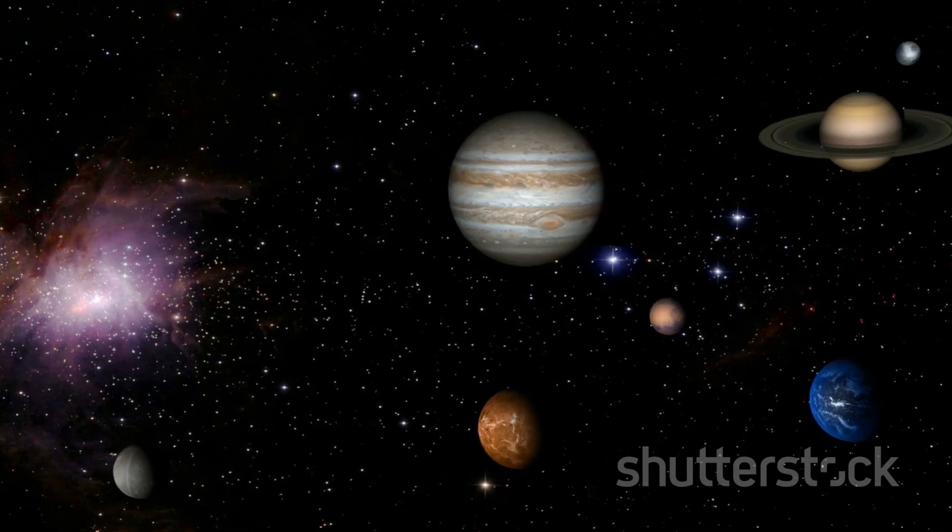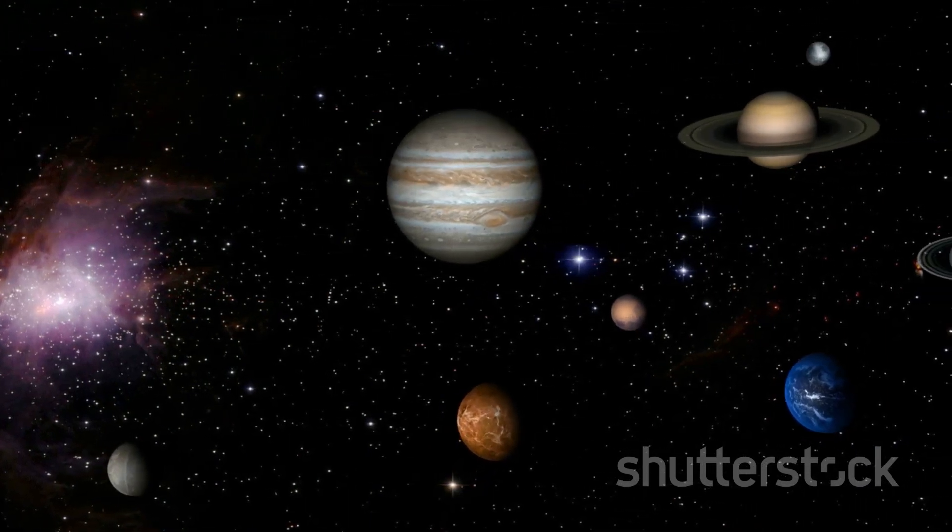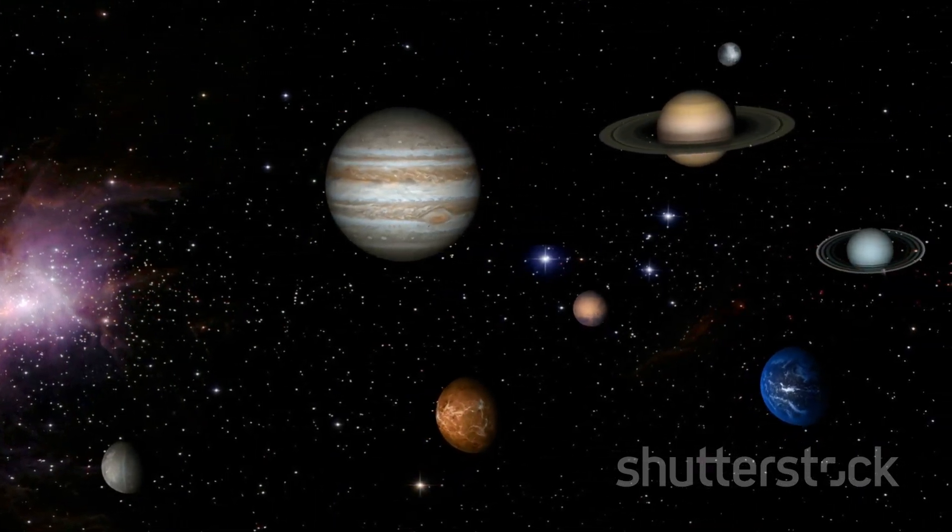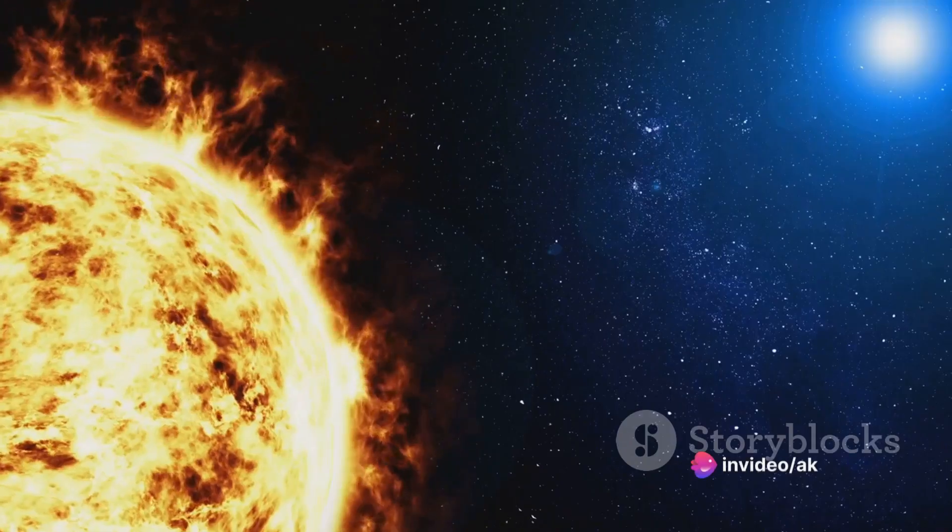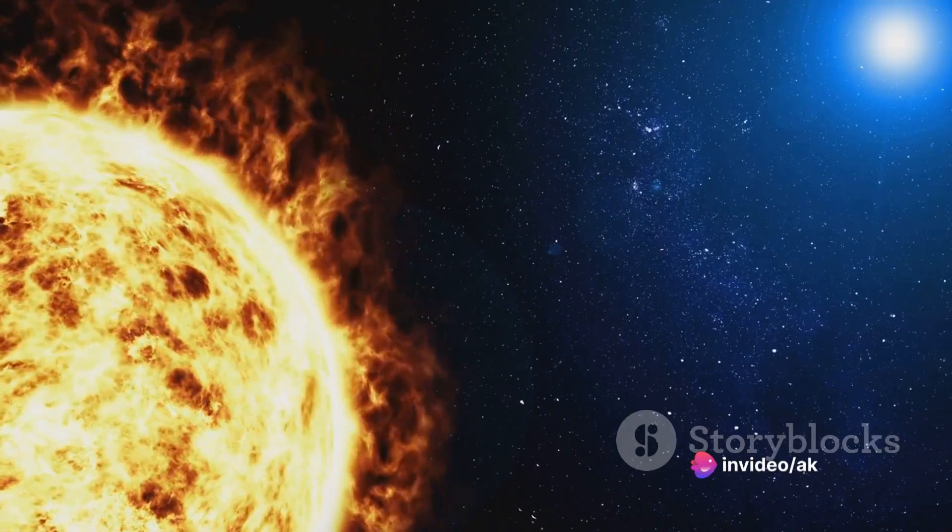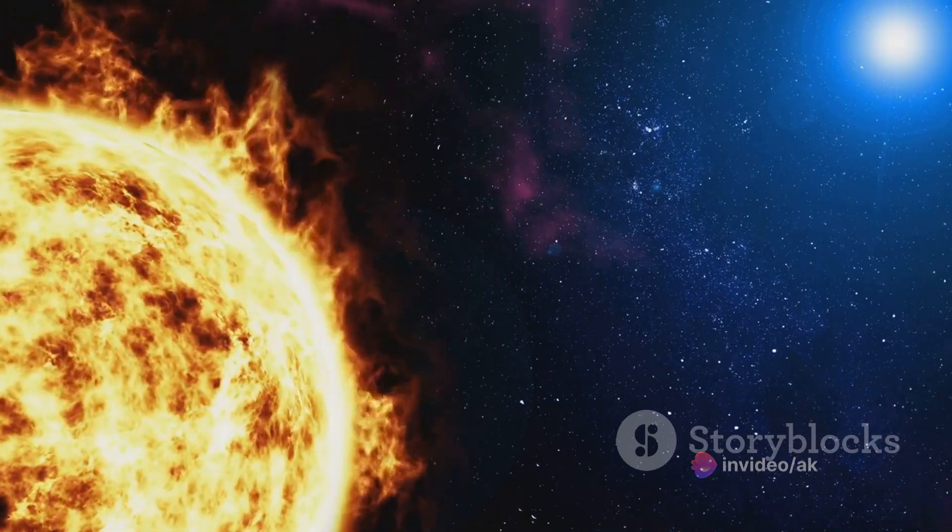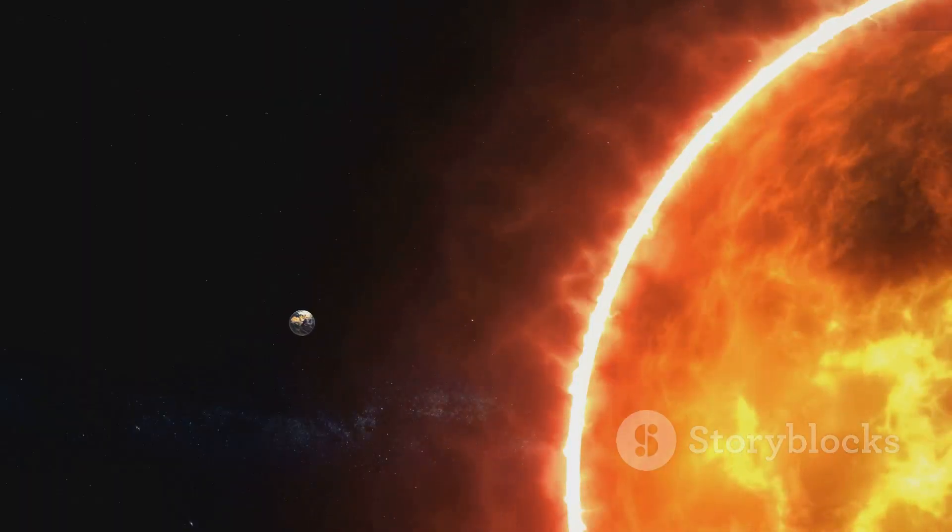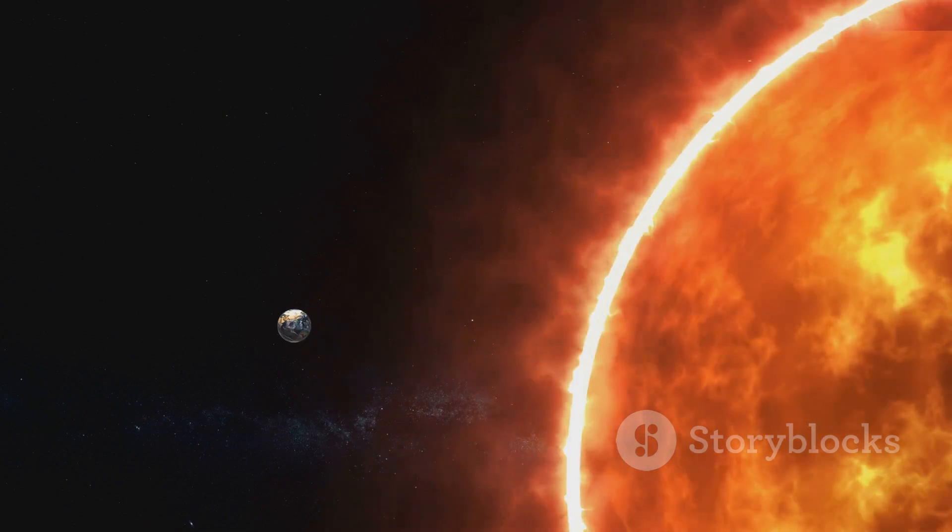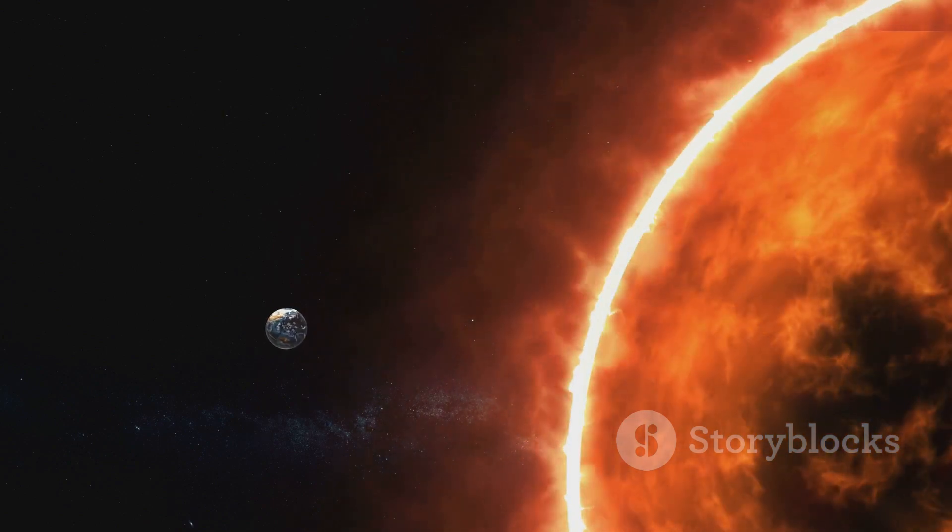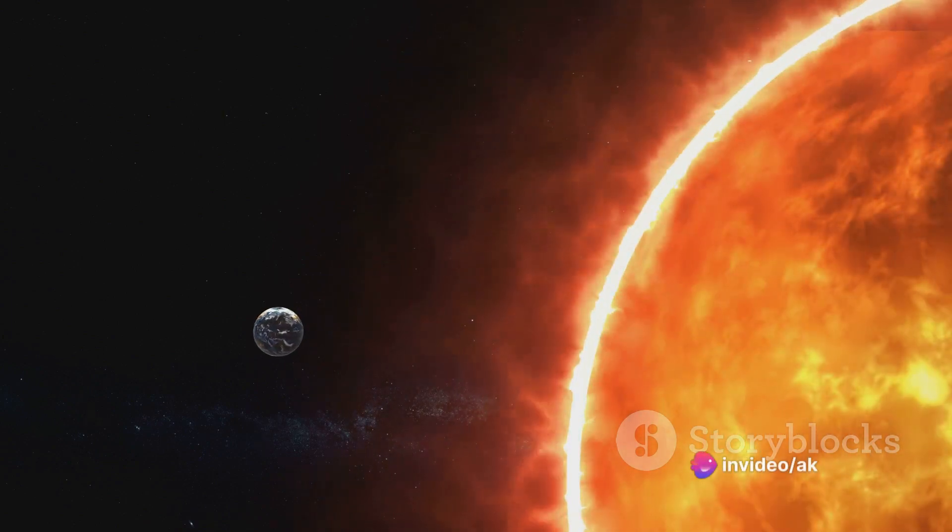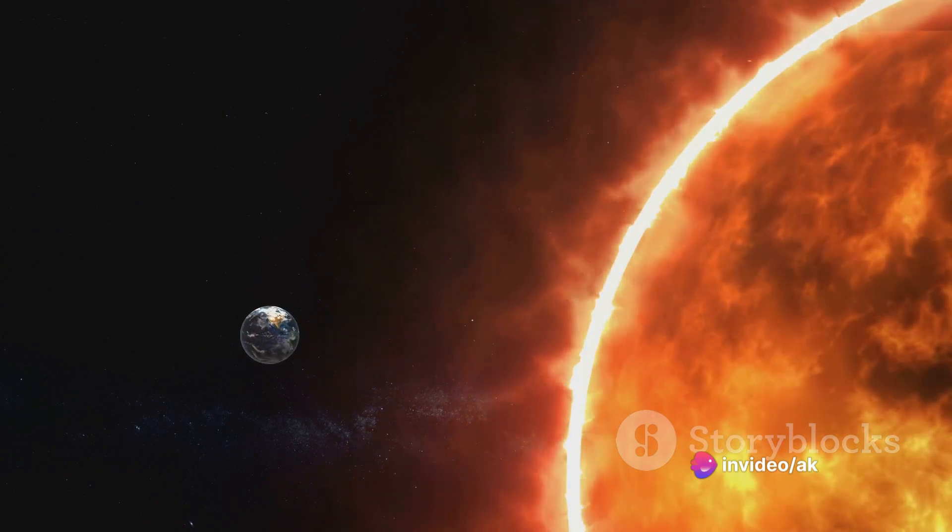Now you might be wondering, what does this mean for our solar system? Interestingly, we're quite safe owing to our location on the outer arm of the Milky Way. Our little corner of the universe is far enough from the action that we're not likely to be directly affected by the collision. Our sun, earth, and the rest of our solar system should largely remain intact.